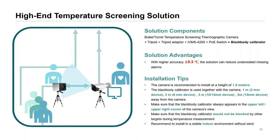In terms of installation, the camera should be mounted at 1.5 to 2.5 meters depending on whether you choose the professional or eco series. The calibrator must be positioned within the camera's field of view. For a 3mm lens camera, the calibrator must be no more than 1 meter away; for a 15mm lens camera, no more than 5 meters away.